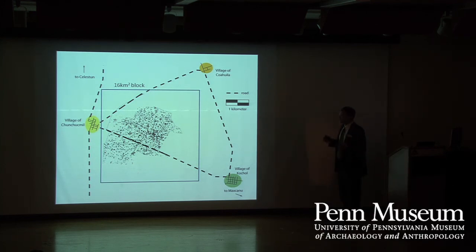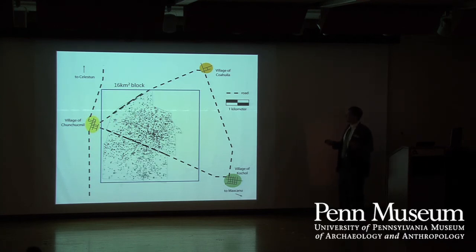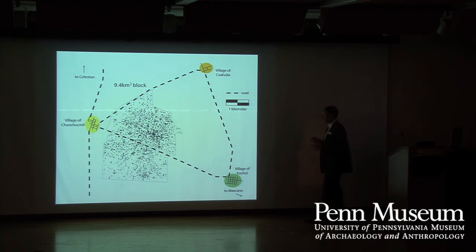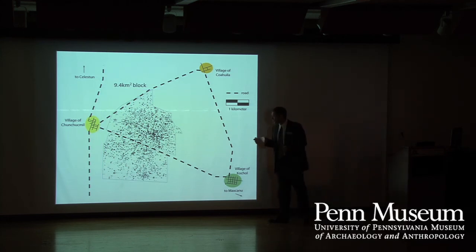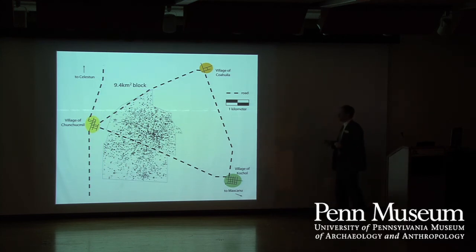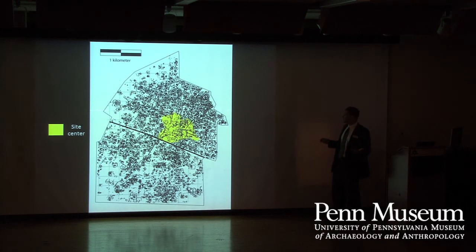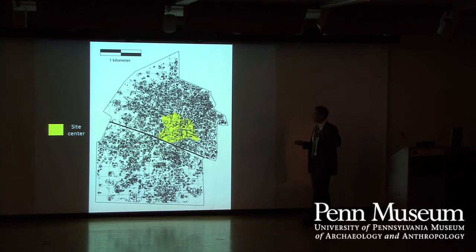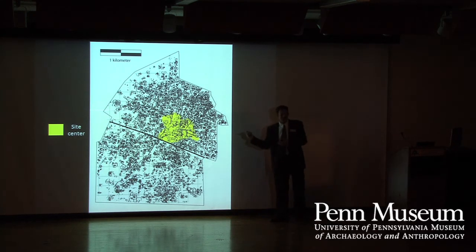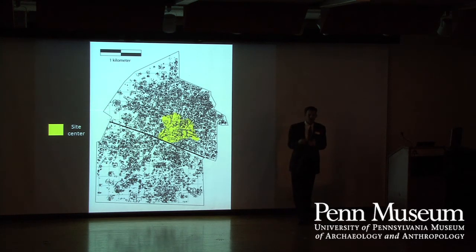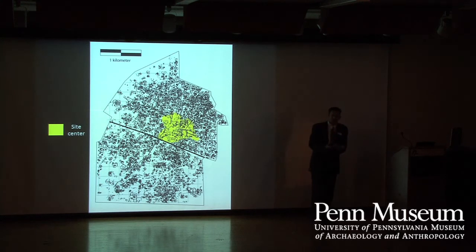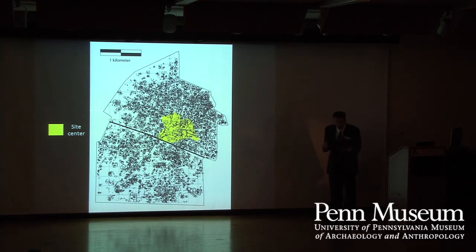In 2003 we decided to do a little more in 2004 and 2005. What we ended up with was a 9.4-square-kilometer block. We were able to classify the site into different zones — there's the site center, which has the large architecture. None of this architecture is actually as big as the architecture at, say, San Bartolo, which Simon Martin mentioned last night as a very insignificant site — so I guess we have a few things in perspective.